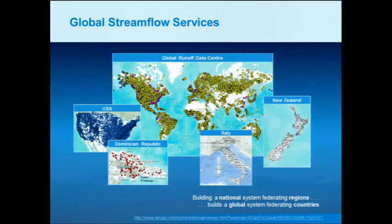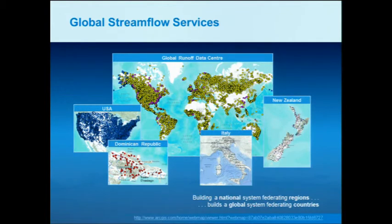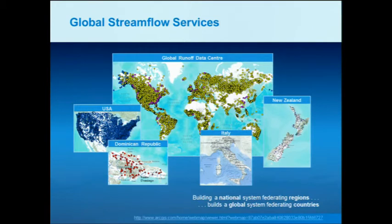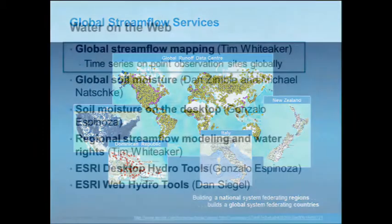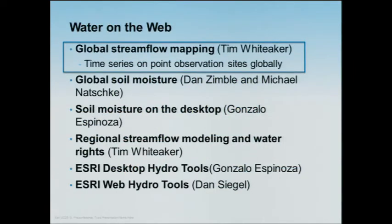Later this afternoon, you'll hear about the New Zealand story from Brent Watson and Sean Hodges from Palmerston North, New Zealand. They'll show how they've published their observations data for their regional organization — one of 16 regional agencies plus one national agency that collect water data in New Zealand. Even within little New Zealand, a country with 4 million people and 250,000 square kilometers, there are 17 water databases. Building a water system that integrates water information within New Zealand is an important national objective. Italy, for example, has 21 regions and does no national data collection. I'm now going to turn over to Tim Whittaker, who will talk about time series on point observations globally.